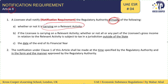If yes, has the licensee earned any income from the relevant activity that is subject to tax in a jurisdiction outside of the state? The licensee will also be required to mention the date of the end of the relevant financial year. These are the minimum requirements for the notification.